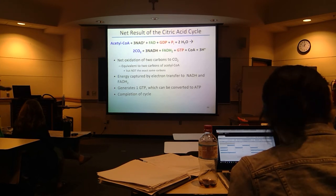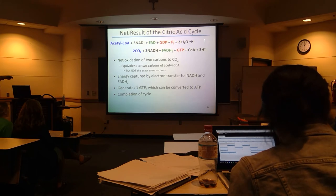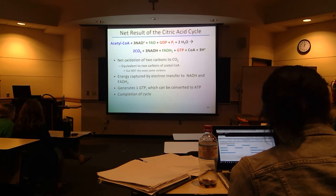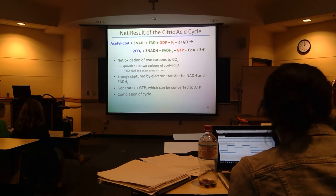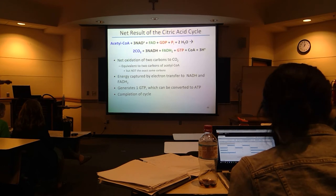So that's what we generate from one acetyl-CoA entering the cycle — one cycle. Don't get confused about how many times it goes around with the carbons versus what are the yields from one round of the cycle. This is one round of the cycle.